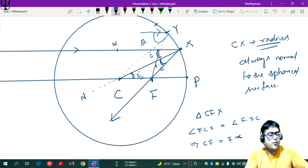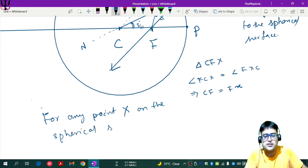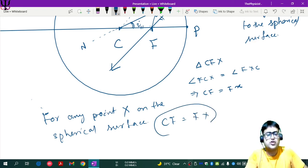So basically any point you take on the sphere, for any point you can say that for any point X on the spherical surface, CF is equal to FX that we can show. So let us call that CF equals to FX.